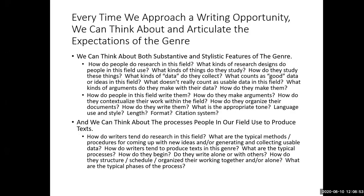How do we make our arguments? How do we contextualize our work? What citation systems are we expected to use? We can also think about the processes that people in our fields use to produce text — how do they do research, come up with data, analyze it? What are the typical processes for writing texts in particular genres? A lot of us think we write from start to finish, but nobody in graduate school writes an article that way. We tend to write from the inside out — in engineering or science, you write your methods first, then your findings, then your analysis, then go back and write your introduction.